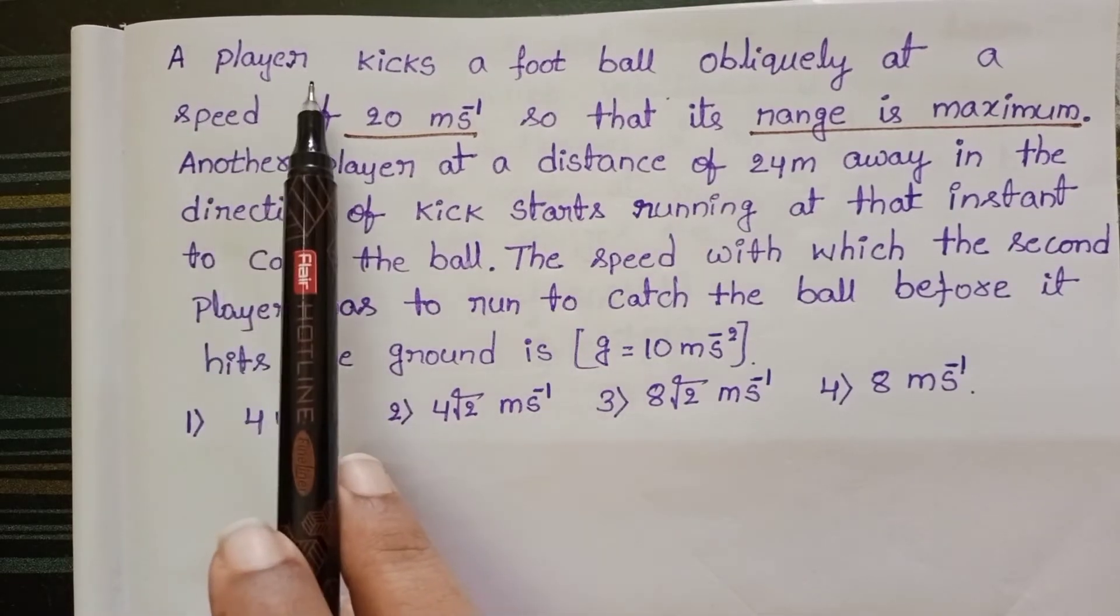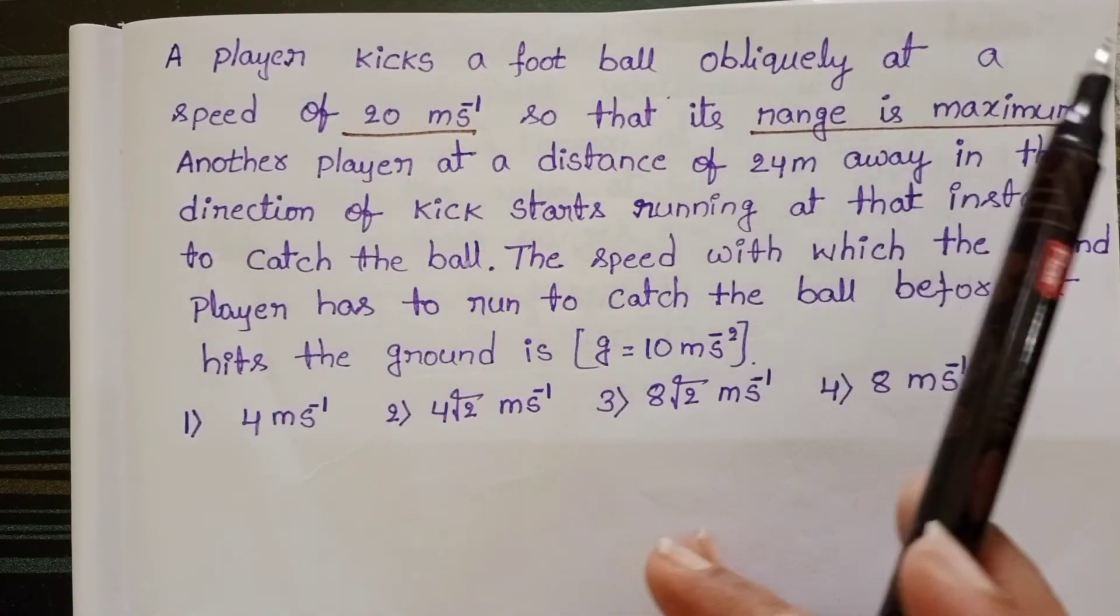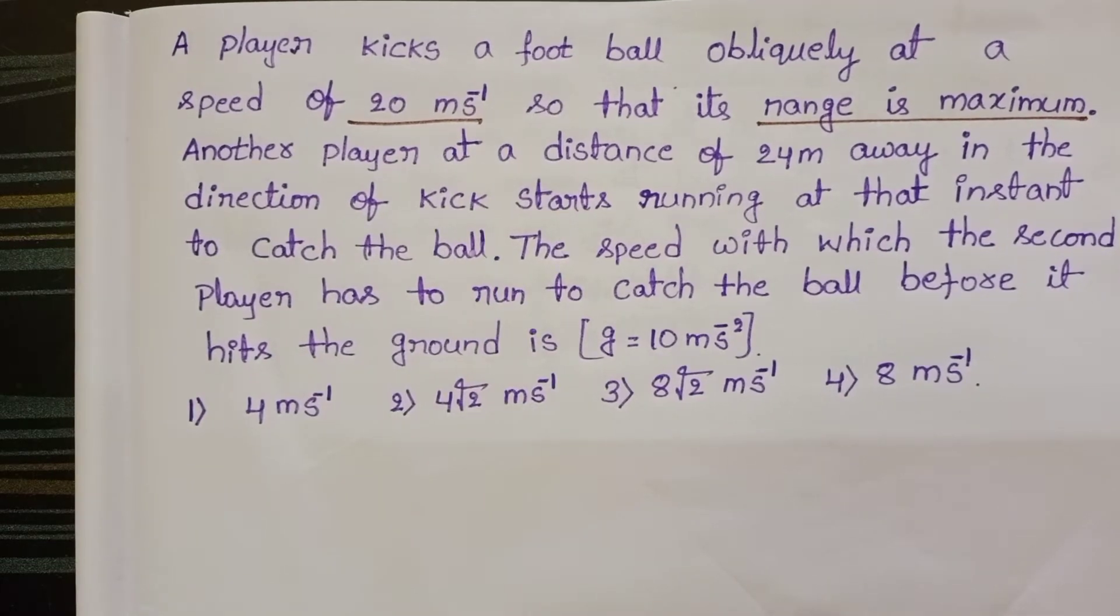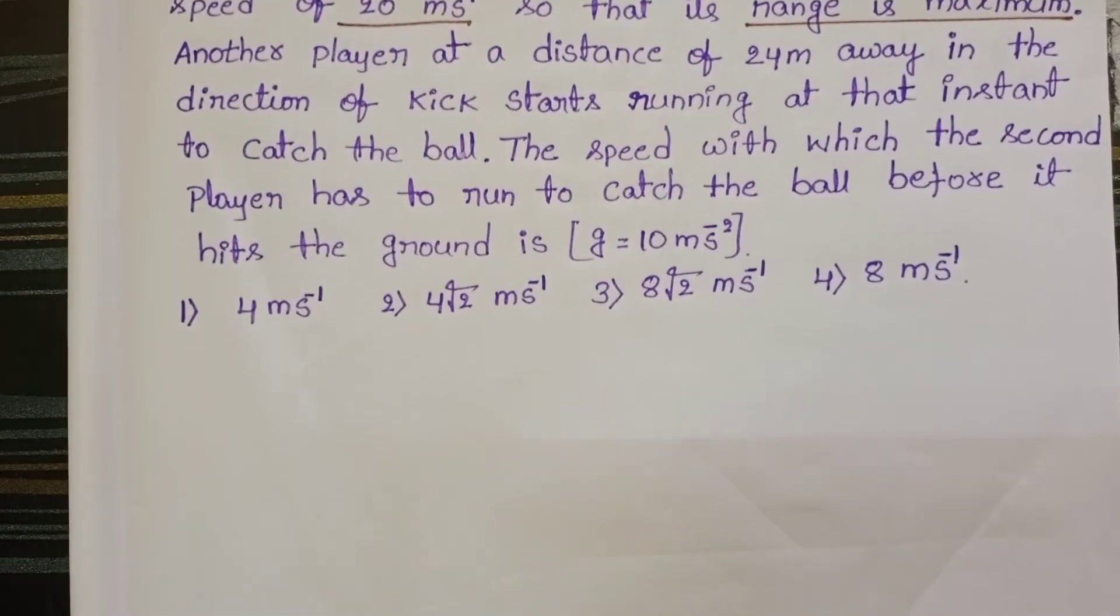So here first player kicks a football obliquely with a speed of 20 meters per second. To solve this question first draw the diagram.